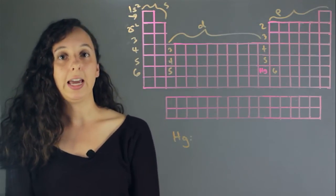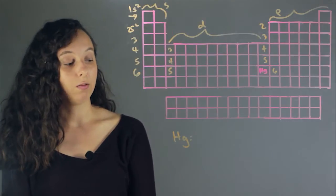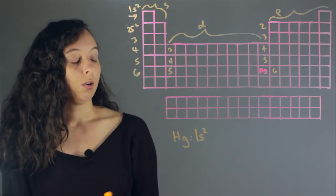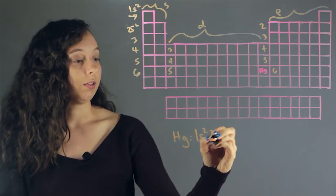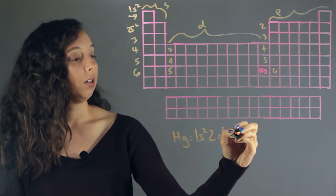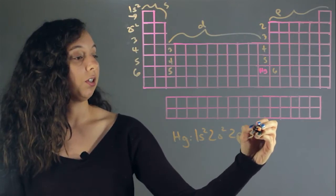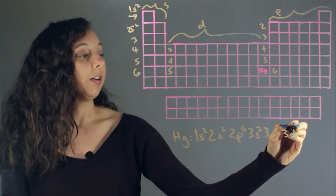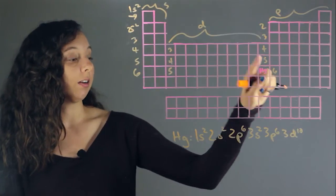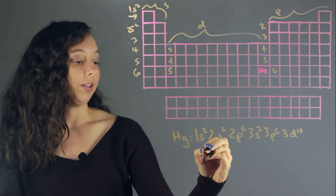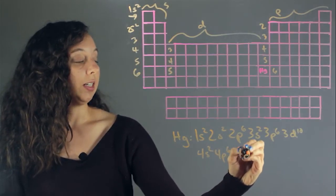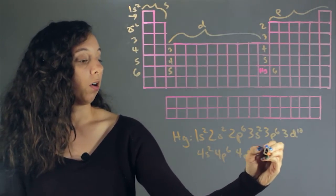So if we lay out all of our orbitals stacking one by one, our electron configuration after all that will be 1s2, 2s2, 2p6, 3s2, 3p6, 3d10. You can see by this time we've gotten here 4s2, 4p6, 4d10, 4f14.